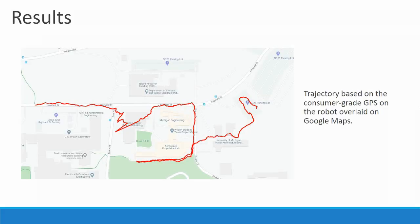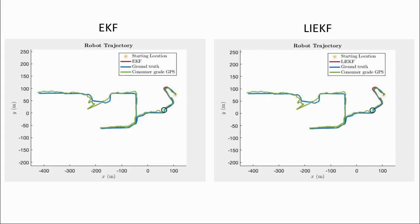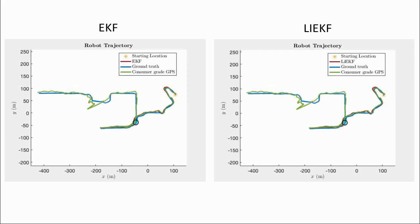In the following slides, we present some visualizations of our results. We overlay the trajectory based on the consumer-grade GPS onto Google Maps; the robot started from the parking lot and ended along Hayworth Street. We also plotted the robot's trajectory over time in MATLAB to compare the EKF and LIEKF implementations. Notice that the trajectories generated by both methods, colored in red, are very accurate with respect to the ground truth path, colored in blue.